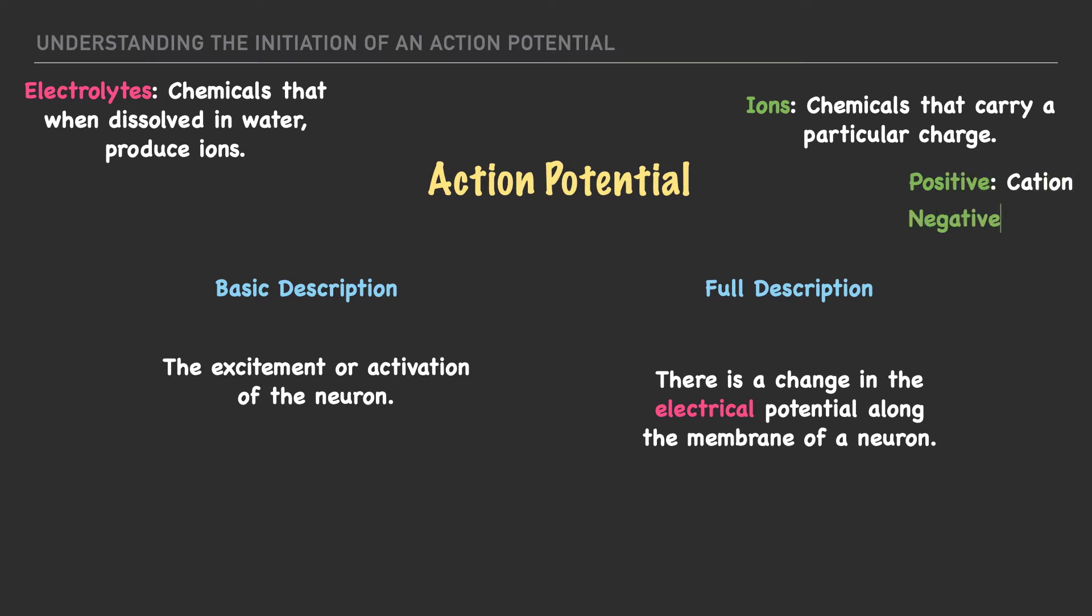For example sodium carries a positive charge, potassium also carries a positive charge and chloride carries a negative charge. So in summary an action potential is a change in the movement and or positioning of these electrolytes along the cellular membrane.